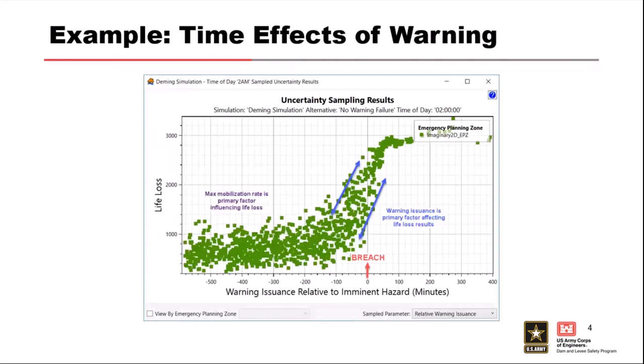LifeSim's got these really pretty scatter plots, right? So this is relative warning issuance and you saw something like this. You could say that life loss is clearly sensitive to the warning issuance parameter or that first public alert, right? So what might that tell you about your study area? Your consequences, your life loss consequences are really sensitive to warning. That's right. So probably our population center where our consequences are concentrated is in close proximity to our dam or levee.